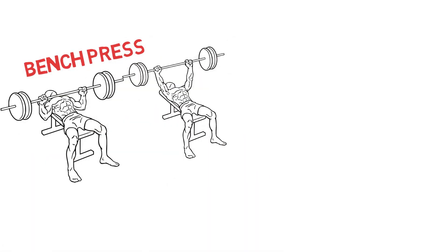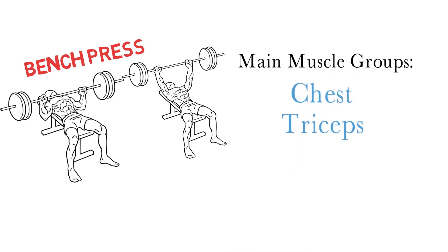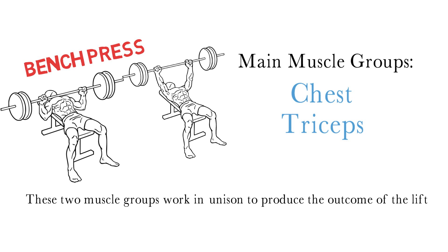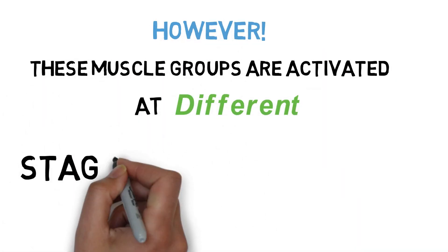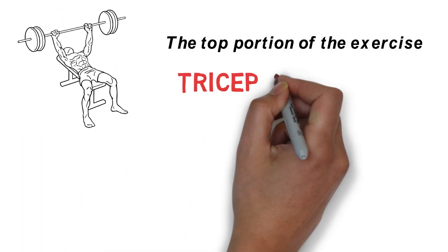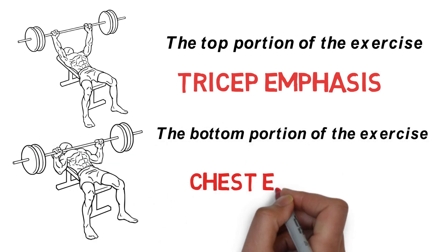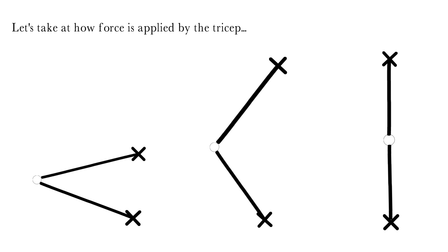The bench press consists of two main muscle groups: the chest and the triceps. These two muscles work in unison to produce the outcome of the lift, however they are activated at different stages of the movement. The top portion of the exercise is a tricep emphasis, while the bottom portion of the exercise is a chest emphasis. Now let's take a look at how force is applied by the tricep.